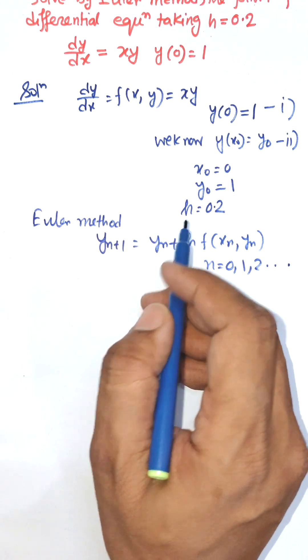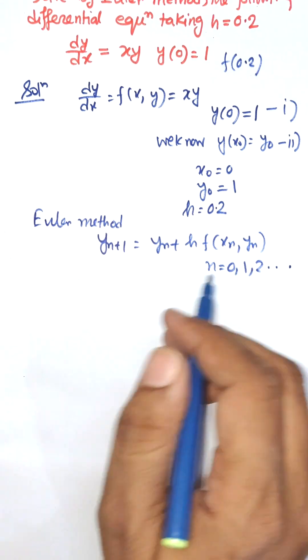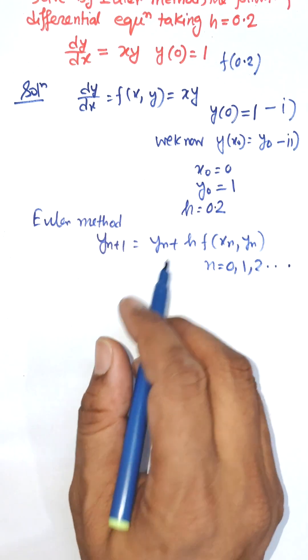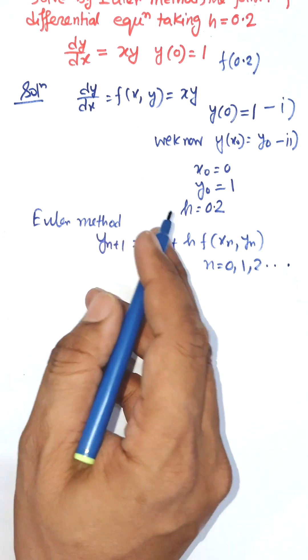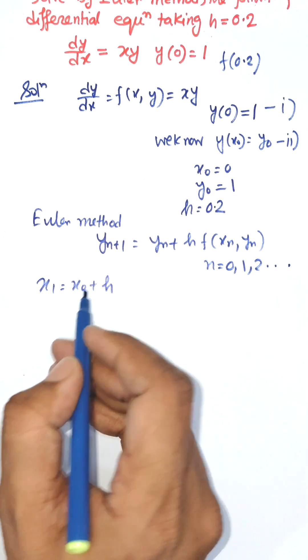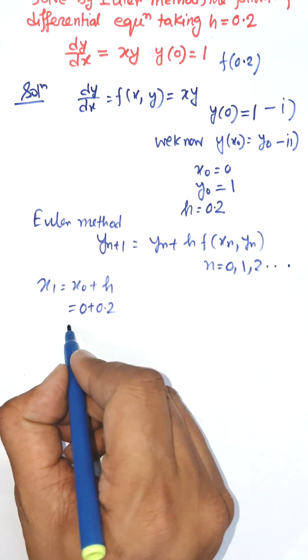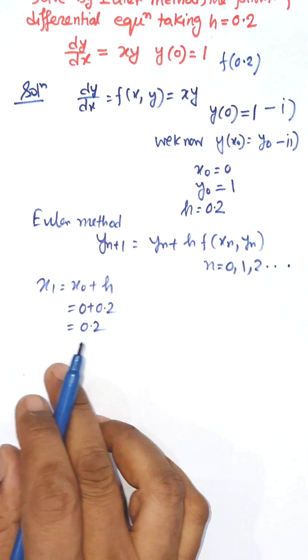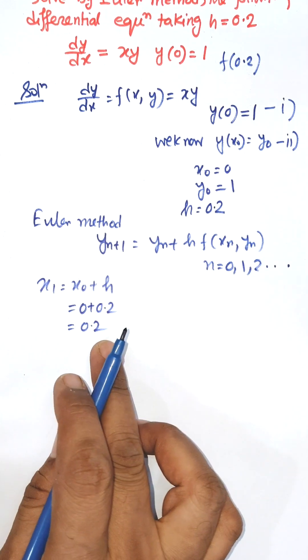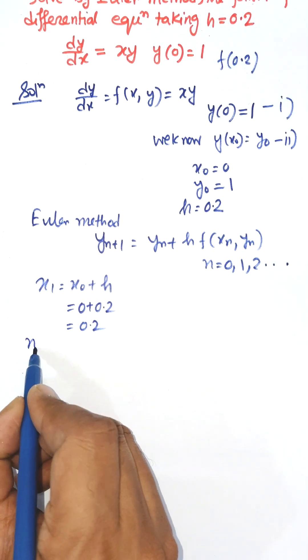We need to find y(0.2) using the formula x1 = x0 + h. x0 is initially 0 and h is 0.2. So, x1 is 0.2. Now, x1 is 0.2. We need to find this one as x1. Now, according to rule, n = 0.